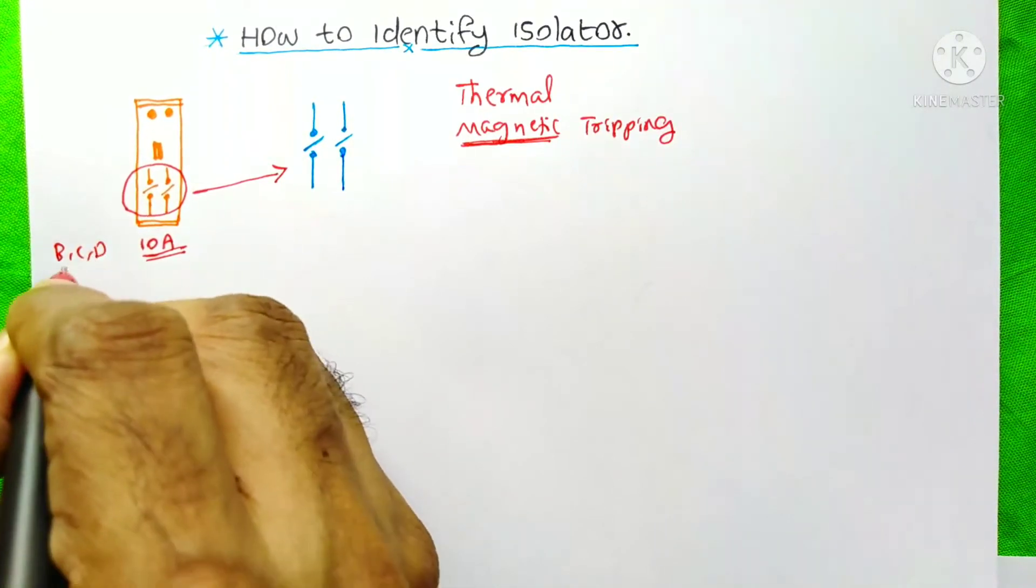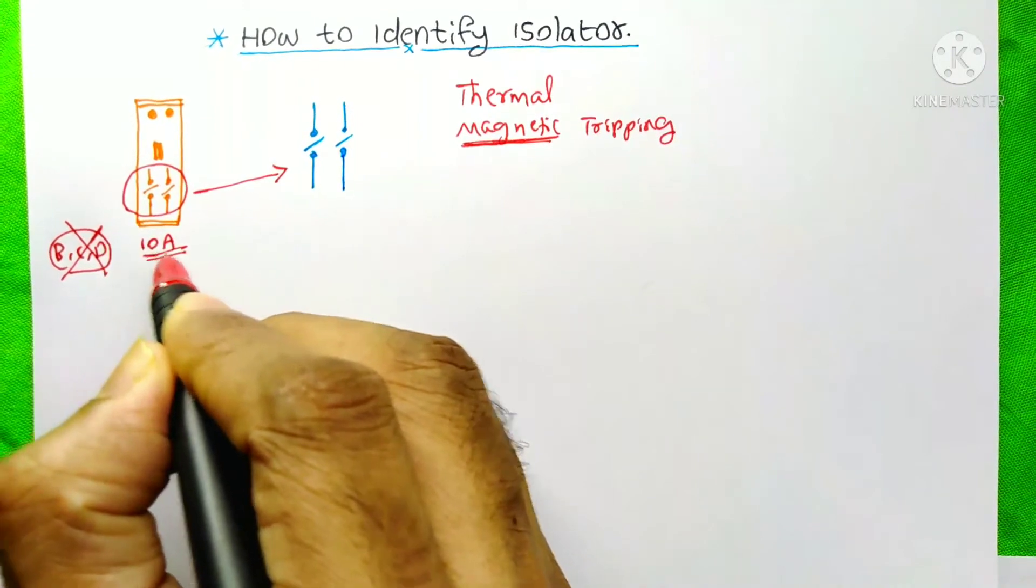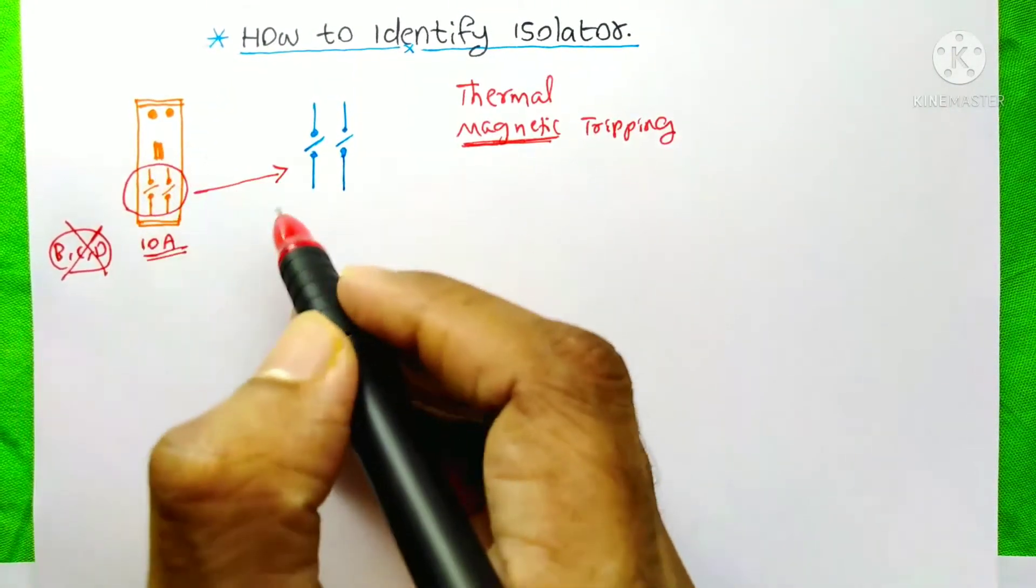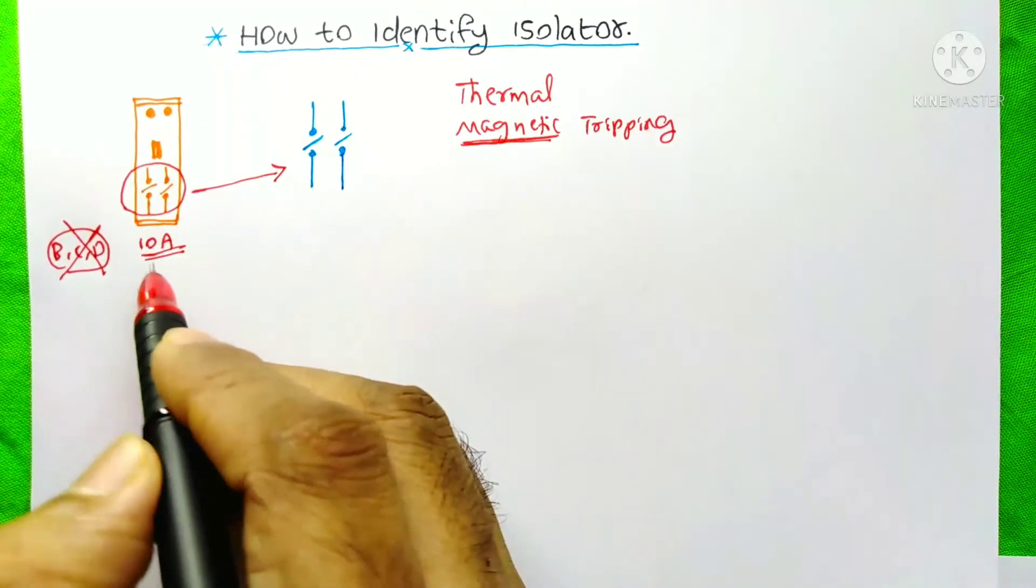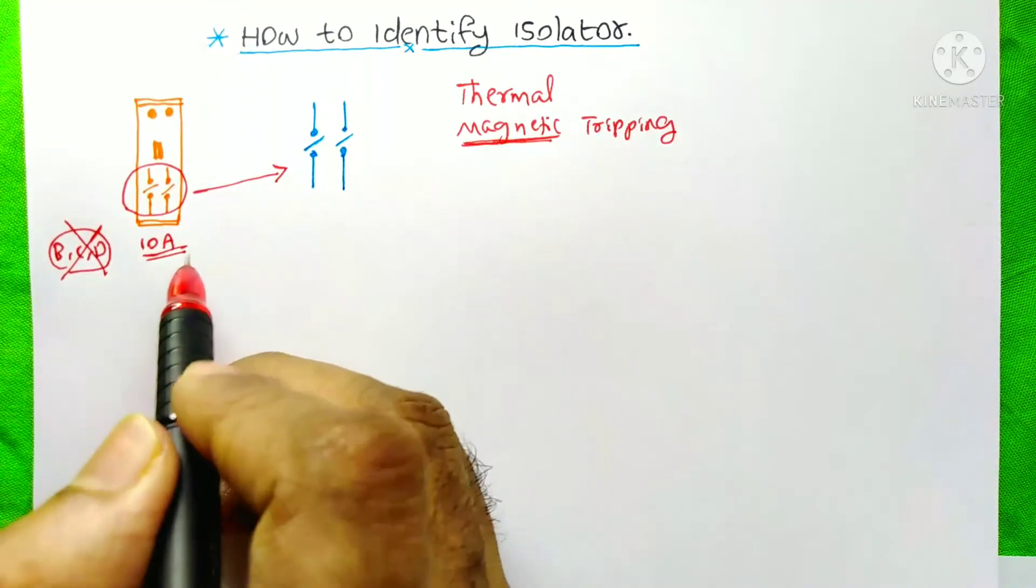You cannot see the B, C or D curves just before this 10A. You can see only this 10A on the top of an isolator. By that you can identify it is an isolator and not an MCB.